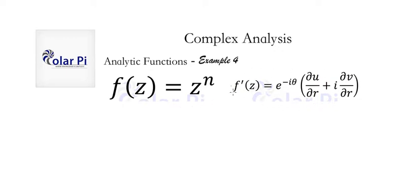we're going to find the derivative of z to the n using polar coordinates. Now the formula for finding f prime in polar coordinates for z, a complex number, is written here on the right. And at some point, I'll make a video showing you where this formula comes from. But for now, we're just going to use it.